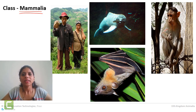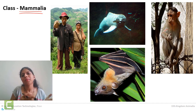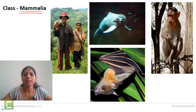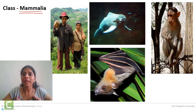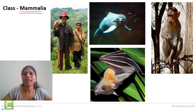Another advanced characteristic present in mammals which makes them different from any other animals is parental care. Parental care means mom and dad — both male and female parents — take care of their child. Like your parents taking care of you — that is parental care.